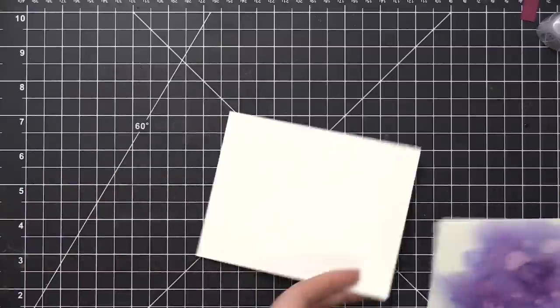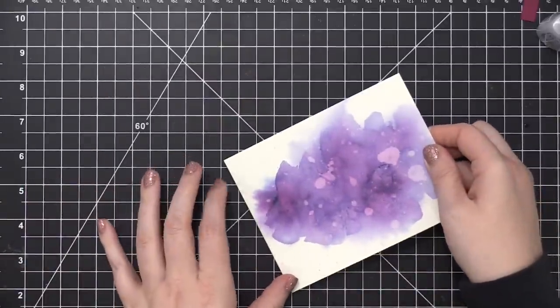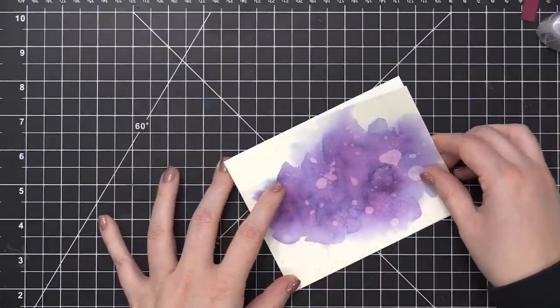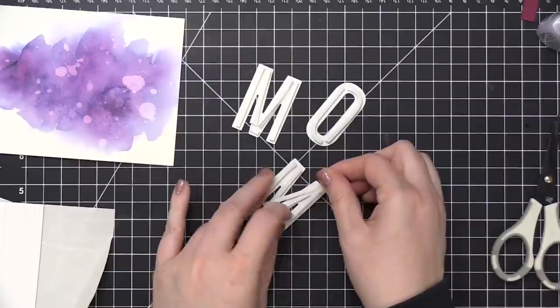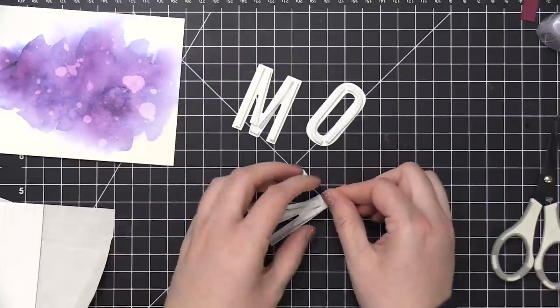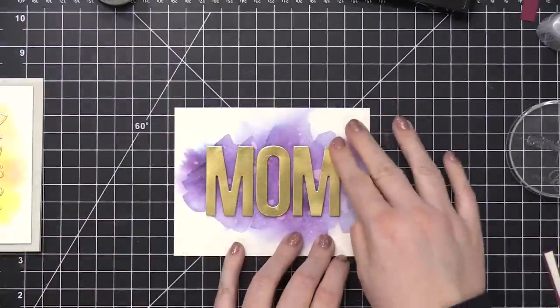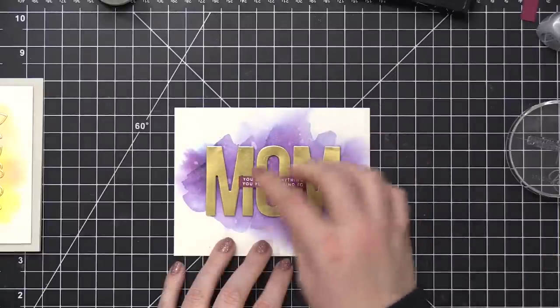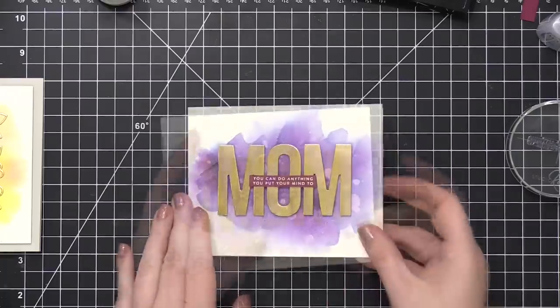So I trimmed that down to be a four and a quarter by five and a half, put some adhesive on the back. I use some Tombow Extreme Adhesive and then put that directly down onto a white card base. This card base is made out of some Neenah Solar White 110 pound cardstock. So these letters are the pieces that were left over from the die cut I used on the first card and I'm going to use just the letters. So I put some really thin strip adhesive on the back of the letters, put those on the card and then I stamped another greeting from that same stamp set and put that over top.